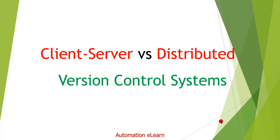Hey guys, welcome back to Automation Elon. There are two types of version control systems available to use: one is client-server version control system and another one is distributed version control system. In this video I will discuss and highlight the core difference between these two types of version control systems with the help of practical examples.